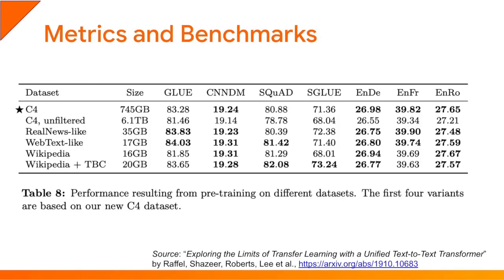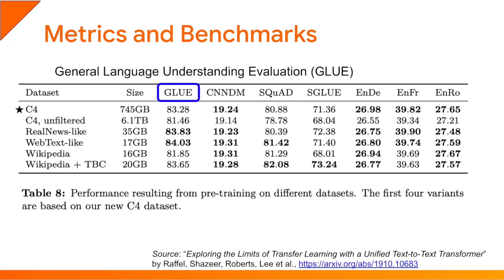Now let's talk about metrics and benchmarks. In order to evaluate and compare NLP models, a number of standardized datasets and metrics have been created. For example, here is an extract from a recent paper comparing various models across several metrics. The General Language Understanding Evaluation, or GLUE, benchmark measures the ability of a model to understand text — this is called Natural Language Understanding, or NLU. The metric is based on several datasets containing pairs of sentences, each with a different task, including sentiment analysis, semantic equivalence, co-reference resolution, question answering, and more. For comparison, humans typically get a score of about 87 on this task.